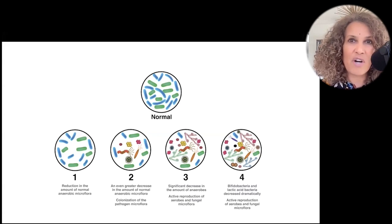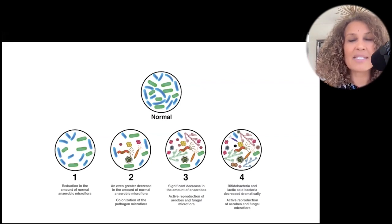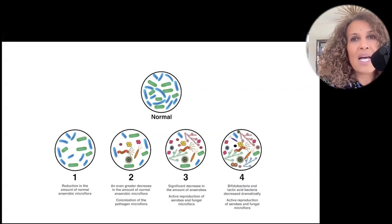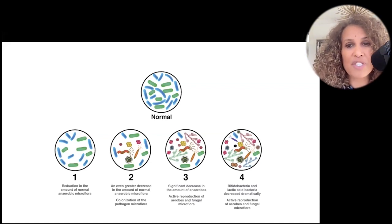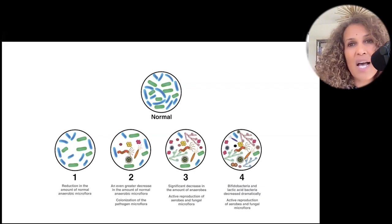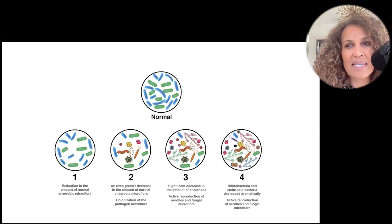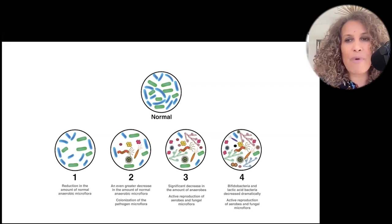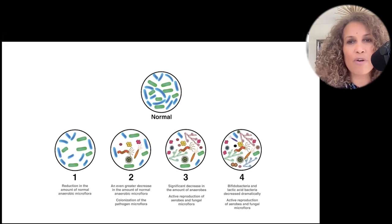But at low levels C. diff is not a problem. It's when you kill off a lot of the healthy bacteria and now the C. diff are like, oh, we've got room. Let's multiply. Same thing for a yeast infection. We all have yeast in our digestive tract and vaginally and yeast actually play an important role in digestion. But when you kill off healthy bacteria, now the yeast, they multiply, they overgrow, and now you have yeast overgrowth. But the problem when you think about it, isn't the yeast. The problem is the lack of healthy gut species. So what happens here in the third stage is you see an even more significant decrease in the amount of healthy anaerobes. And now you start to see not just colonization, but active reproduction of some of these aerobes and the fungal organisms. And then in the final stage with severe microbial imbalance, you see a dramatic decrease in the bifido and the lactic acid bacteria. You can barely see just two tiny little representations and now active reproduction of these aerobes and fungal mycoflora.